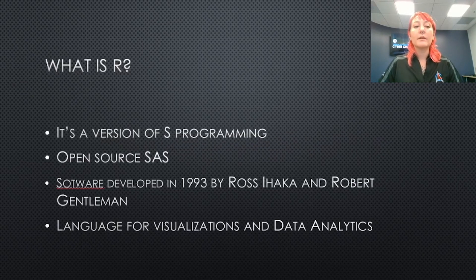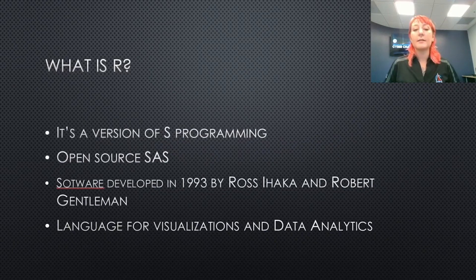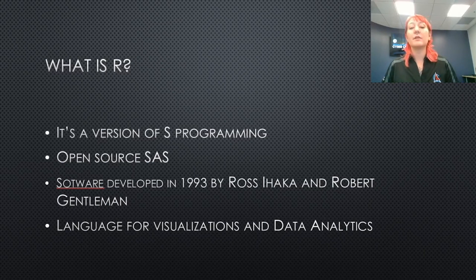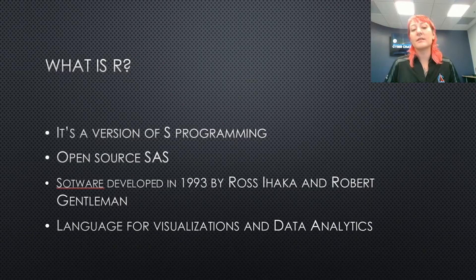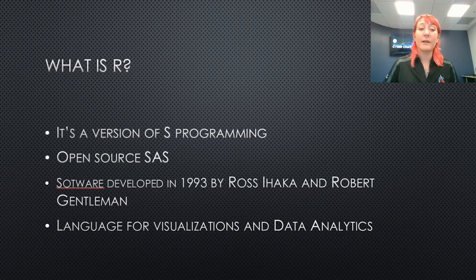So let's start with what is R. R is a programming language developed in 1993 as a solution to the end-of-life programming language S. It's a language mainly for data analytics and visualizations, and it's kind of known for being an open-source SaaS — SaaS standing for Statistical Analysis System. It's very popular and very widely used.